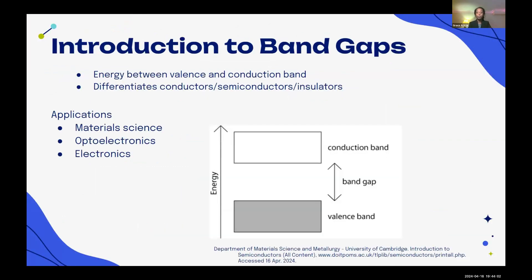The band gap refers to the gap between the valence and conduction bands — regions of energy levels within materials. The band gap tells us the lowest energy required to excite an electron to a state in which it can participate in conduction. In insulators, the band gap is very large and electrons cannot move between the two levels under normal conditions. Within conductors, the levels essentially overlap and electrons are able to move freely between them.